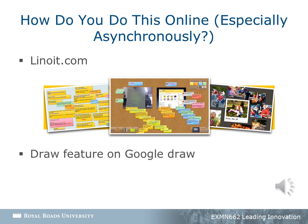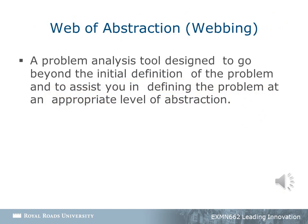How would you do this online? For this course, I'm recommending you use linoit.com. That said, you could definitely use other programs, such as Google Draw. In conclusion, the Web of Abstraction is a problem analysis tool designed to go beyond the initial definition of the problem and to assist you in defining the problem at an appropriate level of abstraction. Hopefully, this presentation provides clarity around how you'll use this tool with your team. Of course, if you have any questions, don't hesitate to ask. Thank you.